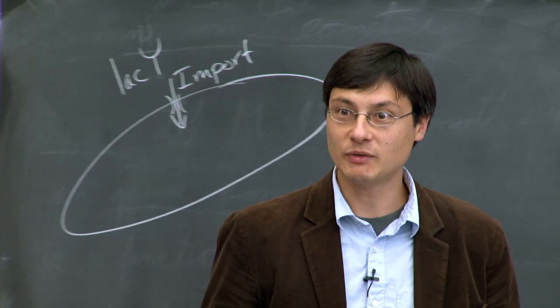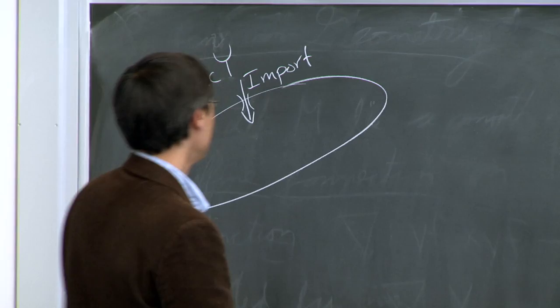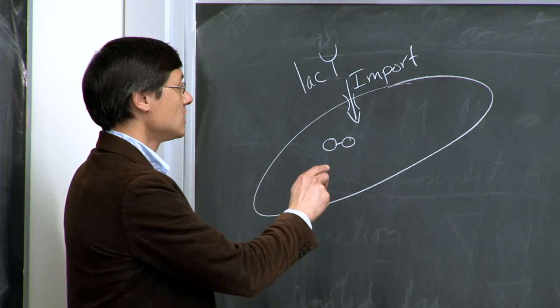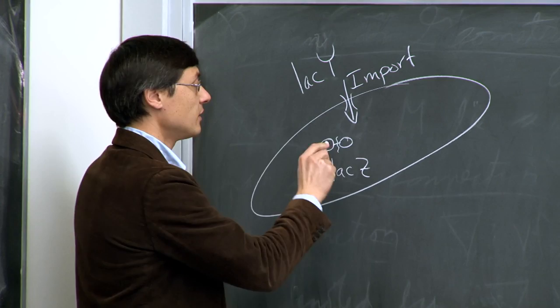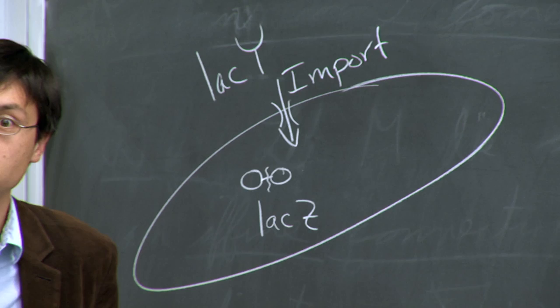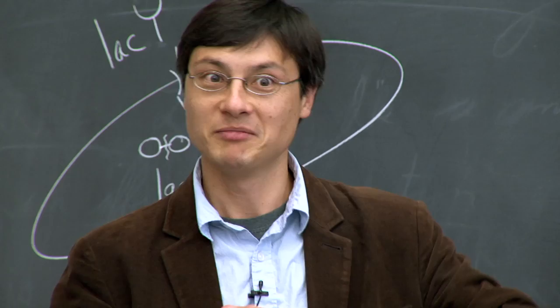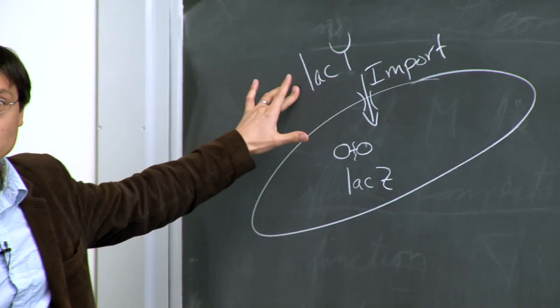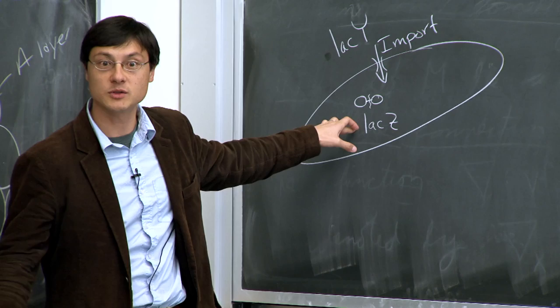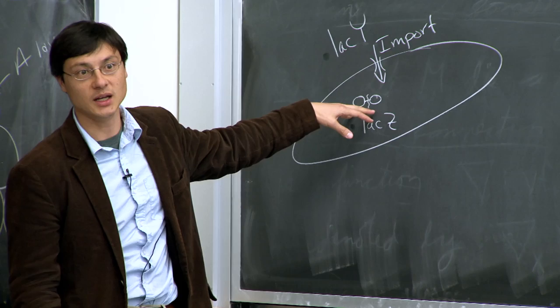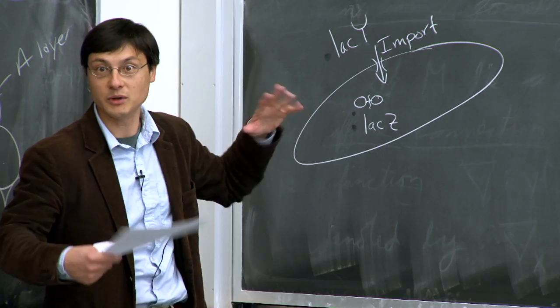The lac operon also has lac A, whose function isn't obvious, so it's rarely discussed. What we always talk about is lac Y, required to import lactose, and lac Z, required to break it down into monosaccharides. The rest of the metabolic machinery is assumed to be available anyway. Can somebody explain how they measured the cost of expressing these proteins?